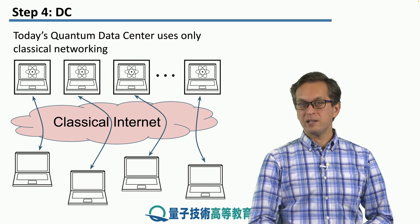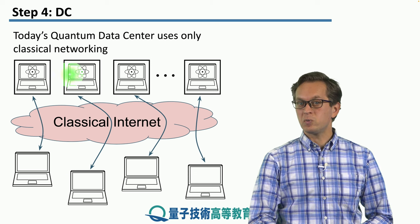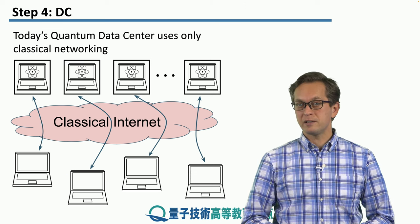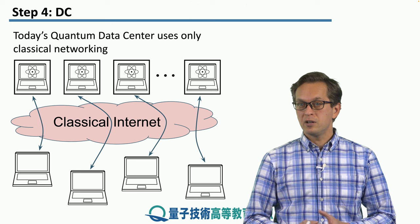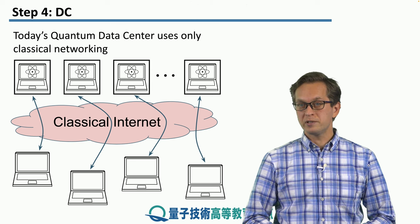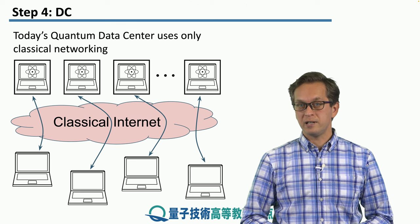Currently, we as classical clients can send our jobs, our computations, through the classical internet to the quantum computers, which then run them and return classical data.